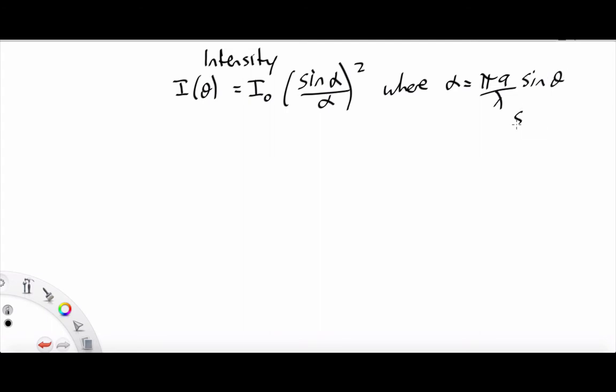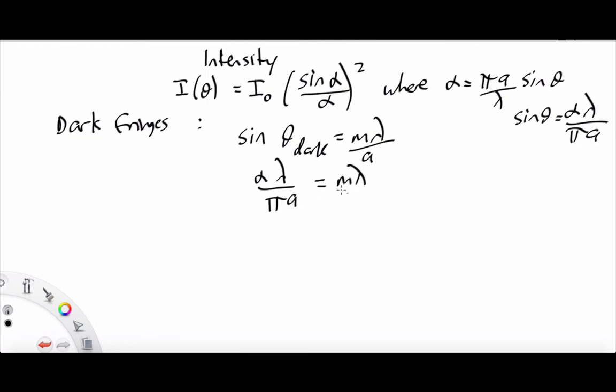So that gives us that sin theta, just rearranging that last little bit, is alpha times lambda over pi times A. Now, we have dark fringes when sin theta dark equals M lambda over A. So that means alpha lambda over pi A equals M lambda over A. A few things to cancel out here.